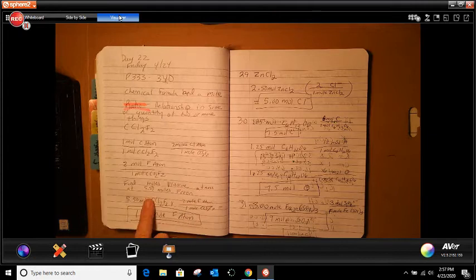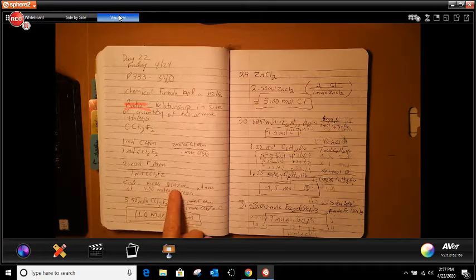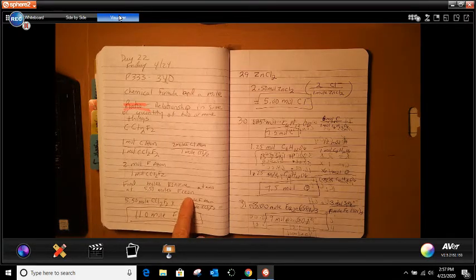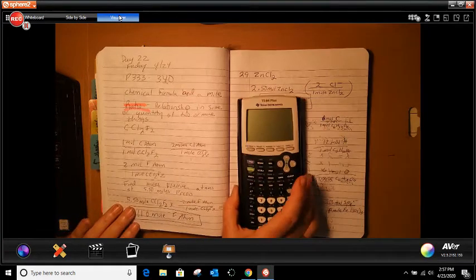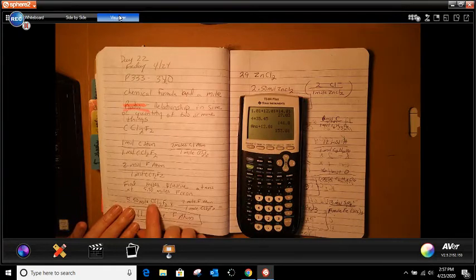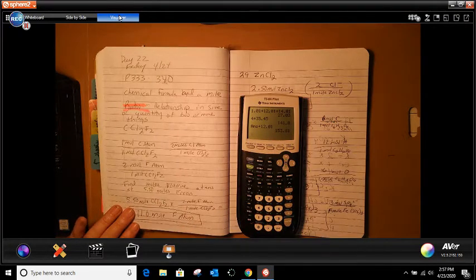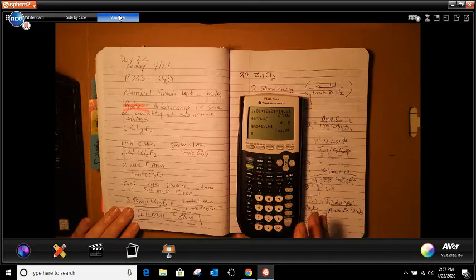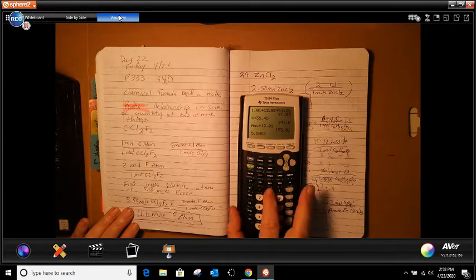So the first one here is where we're going to find out how many moles of fluorine atoms are in 5.50 moles of freon. So when we look at our equation for freon, freon is CCl2F2. But the only thing we're concerned with is just the fluorine by itself. So the first thing we're going to do is we're going to do 5.50, open bracket.